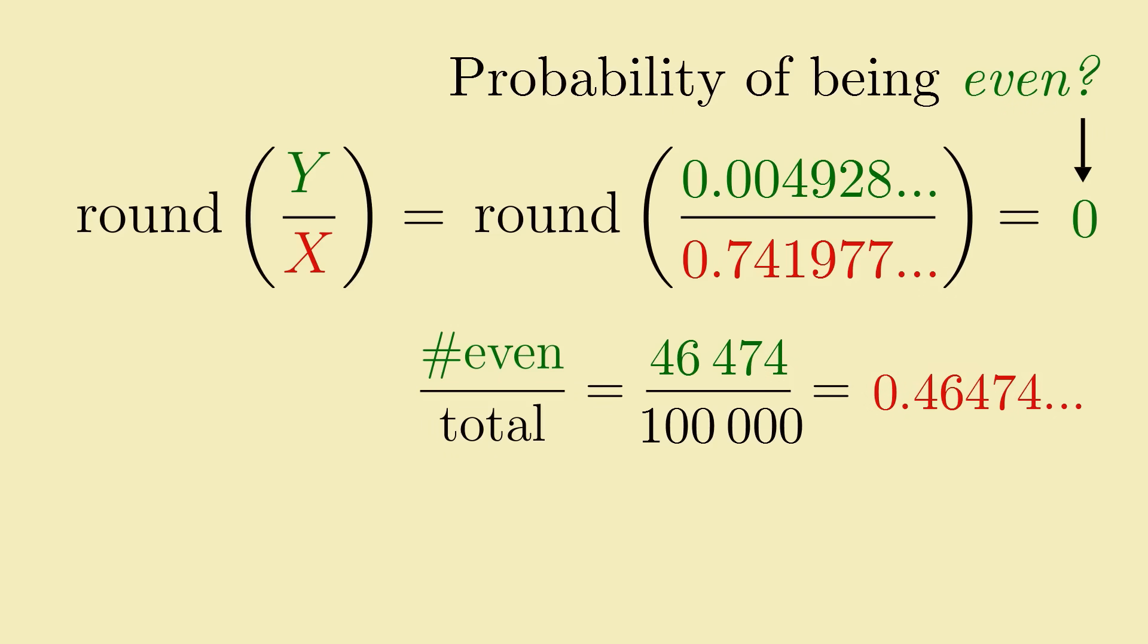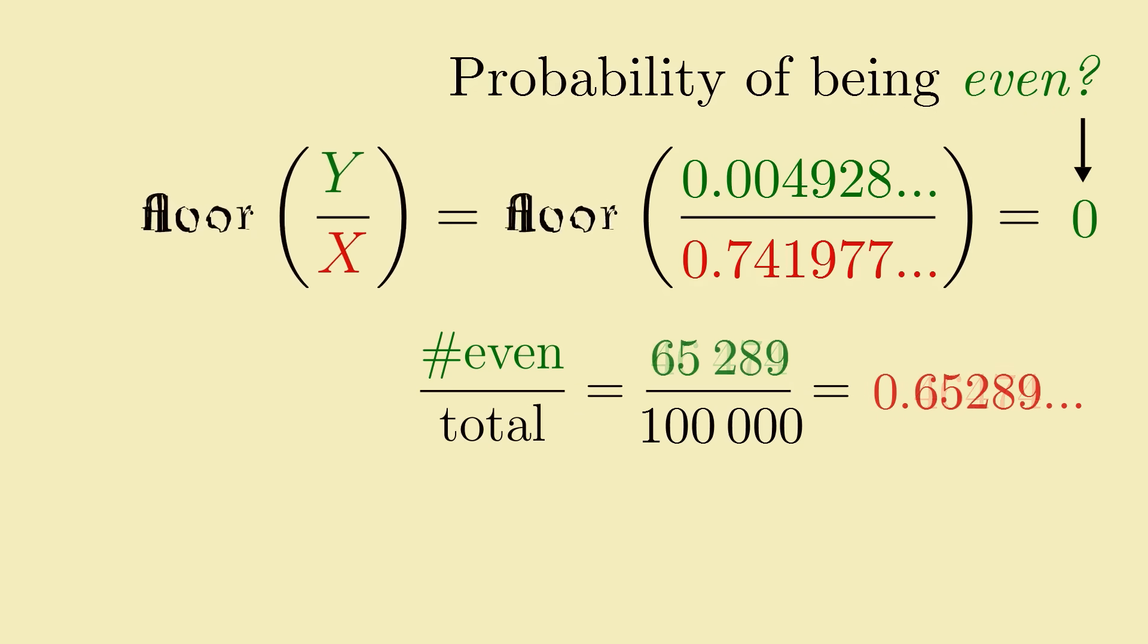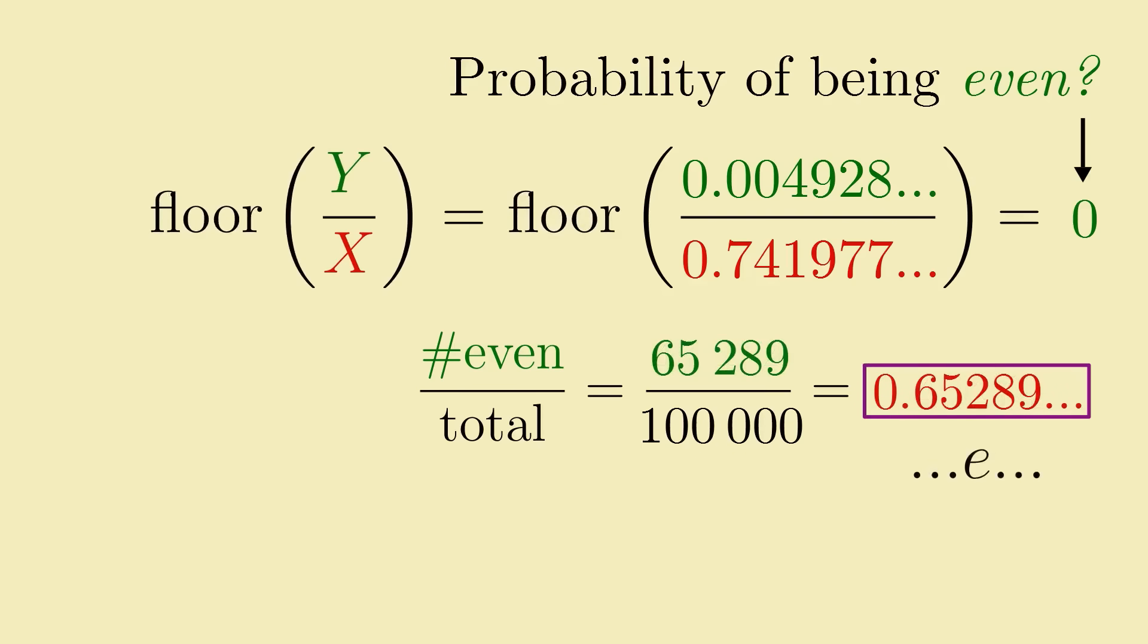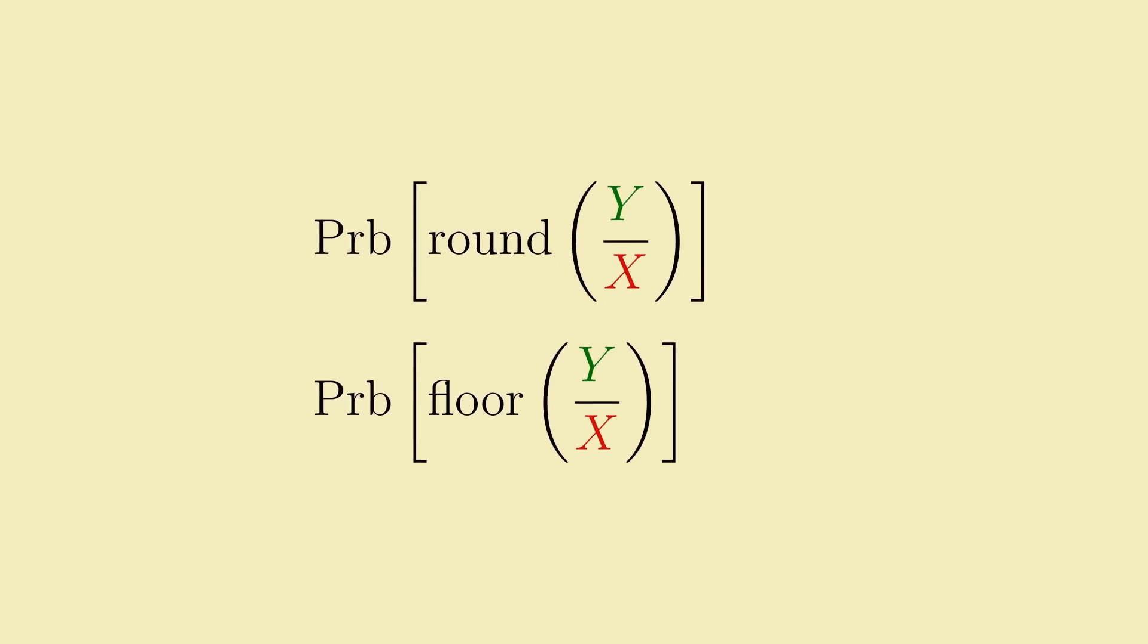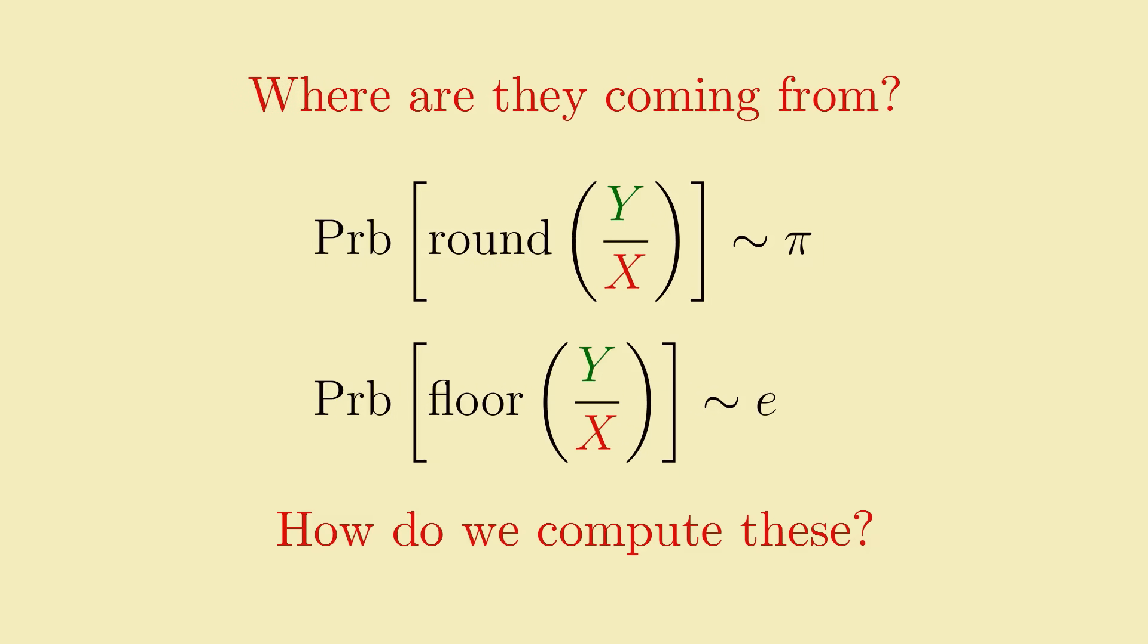But he's actually not the only one showing up this time. Turns out, if we slightly change the problem to where, instead of rounding to the nearest integer, we instead always round down, the probabilities change, and we get e showing up in the formula instead of pi. So this one relatively simple-sounding problem gives rise to both pi and e. Where are they coming from, and how do we even compute these probabilities anyway?